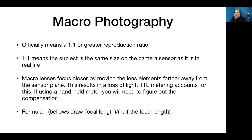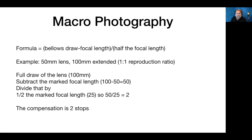Macro officially means a one-to-one reproduction ratio — the subject is the same size on the camera sensor as it is in real life. Macro lenses focus closer by moving the lens elements further away from the sensor plane, which gives a loss of light. TTL metering accounts for it, but if you're using a handheld or flash meter, you'll need to figure out compensation. The formula is: bellows draw minus focal length, over half of the focal length.